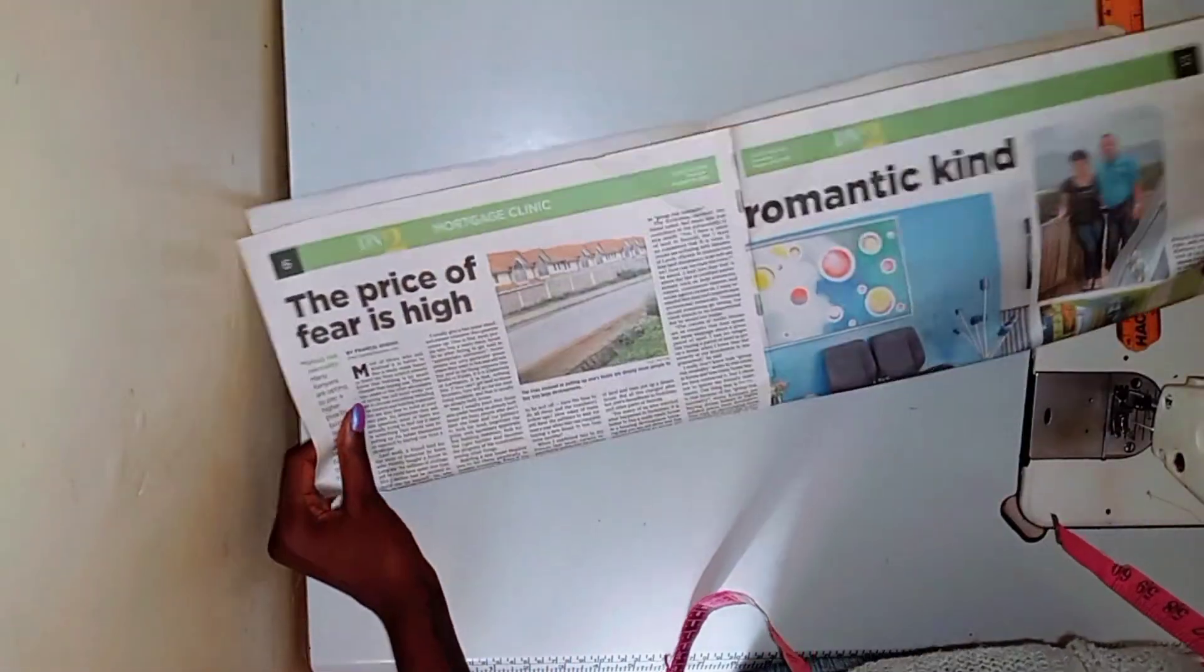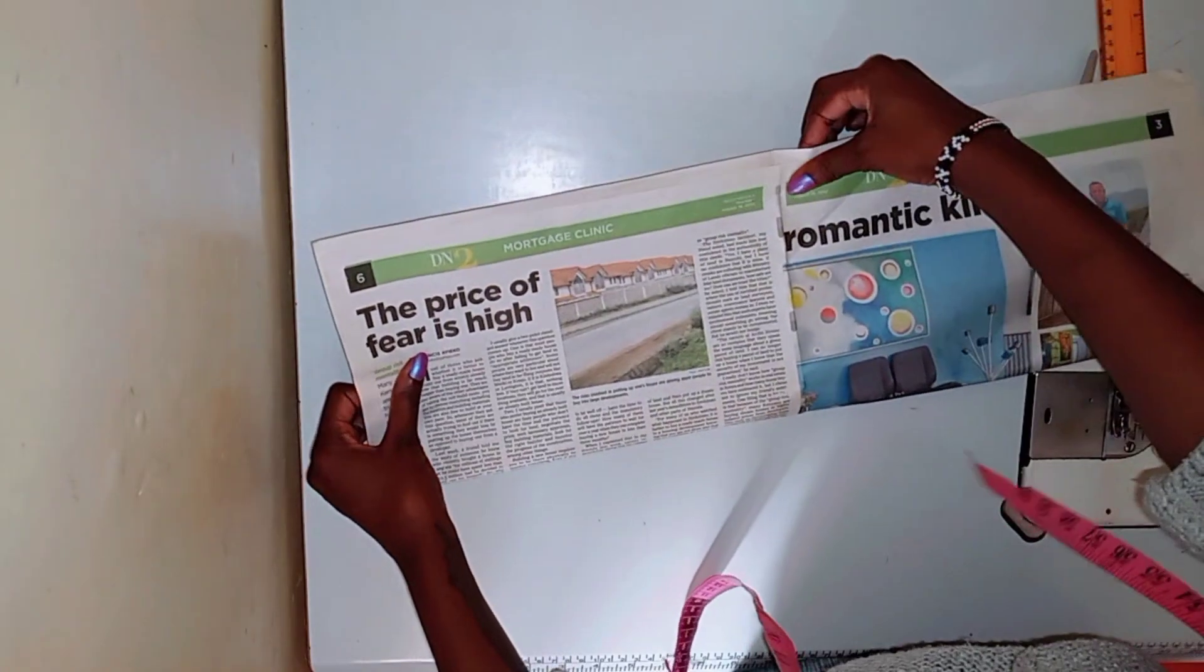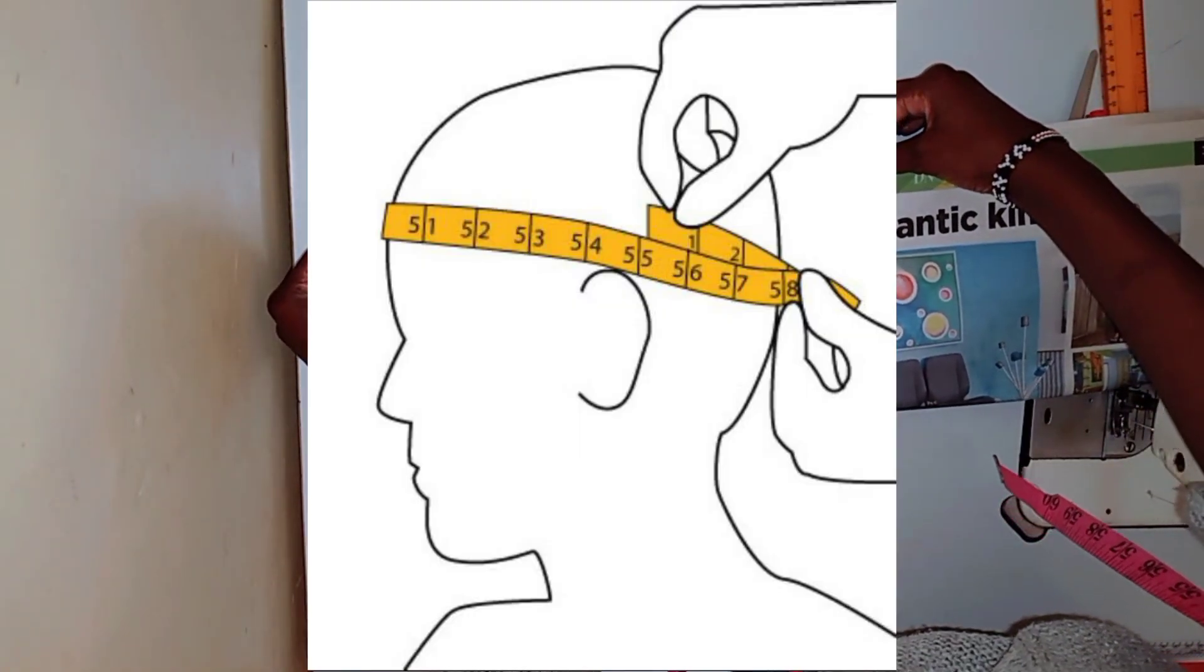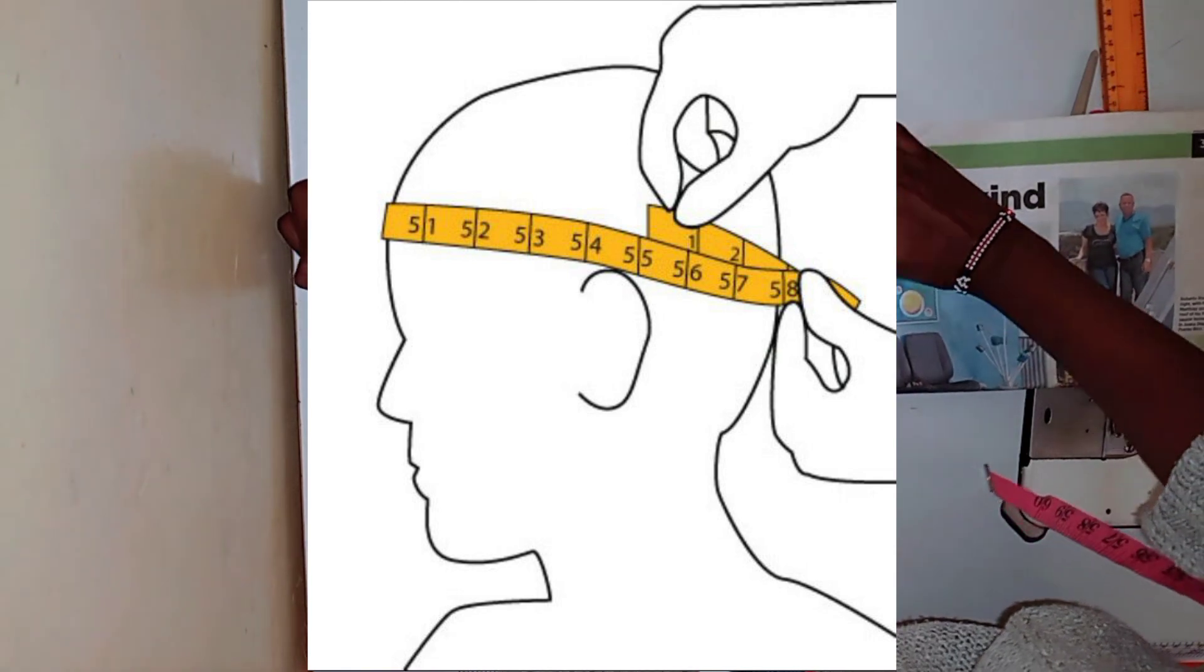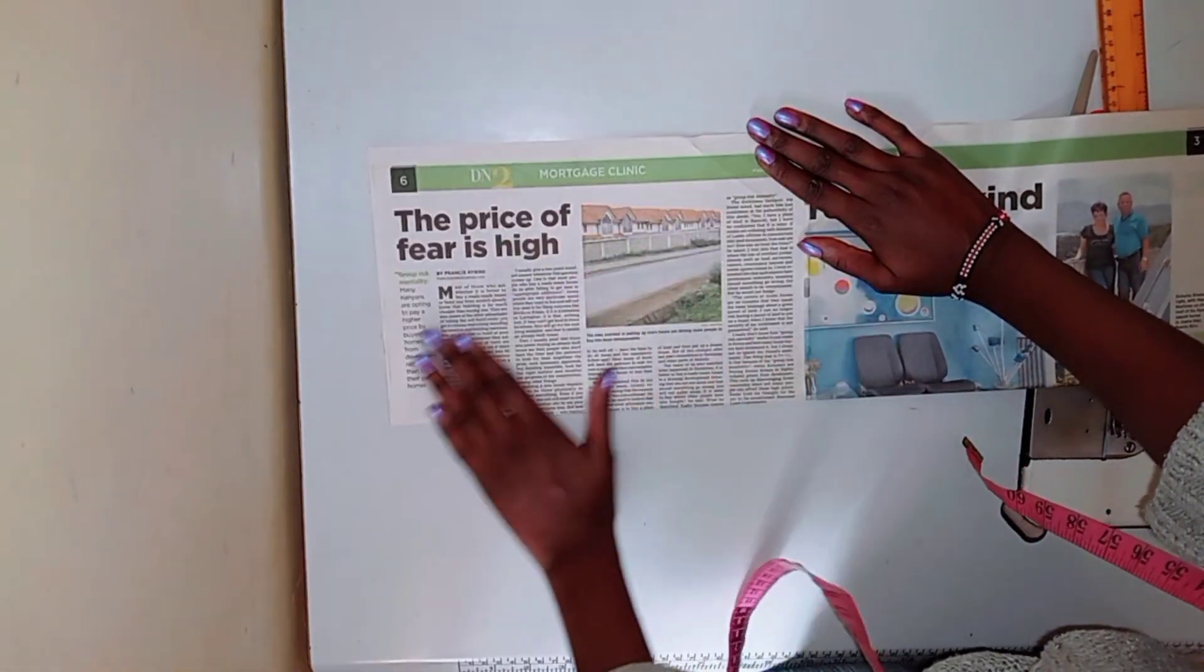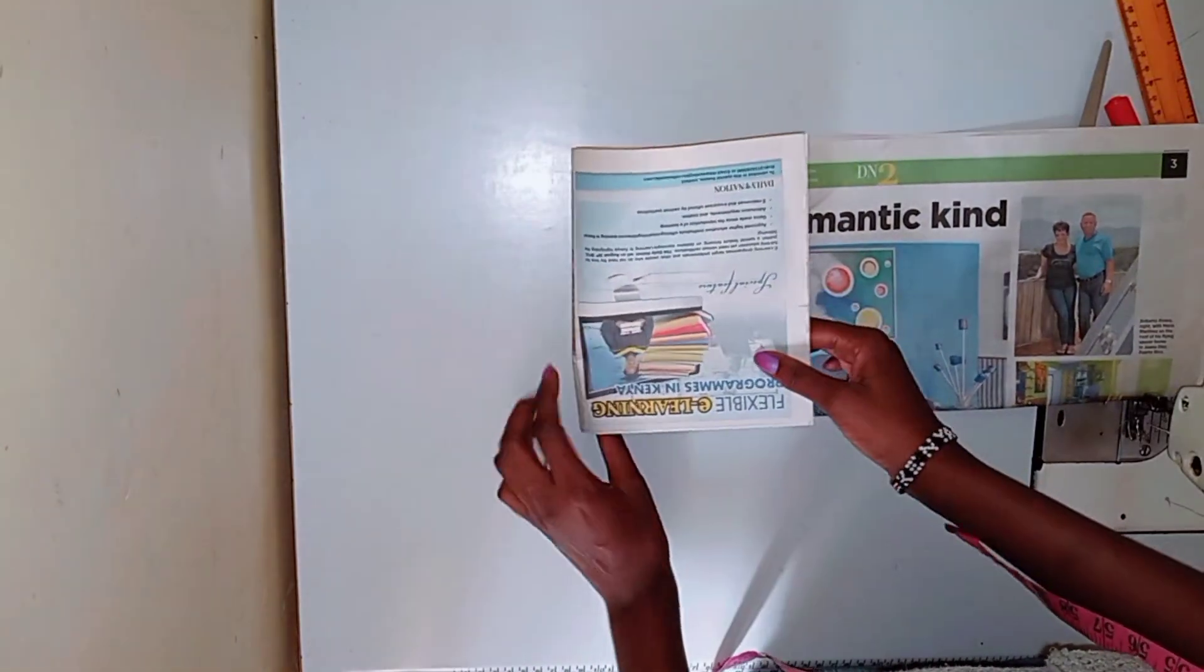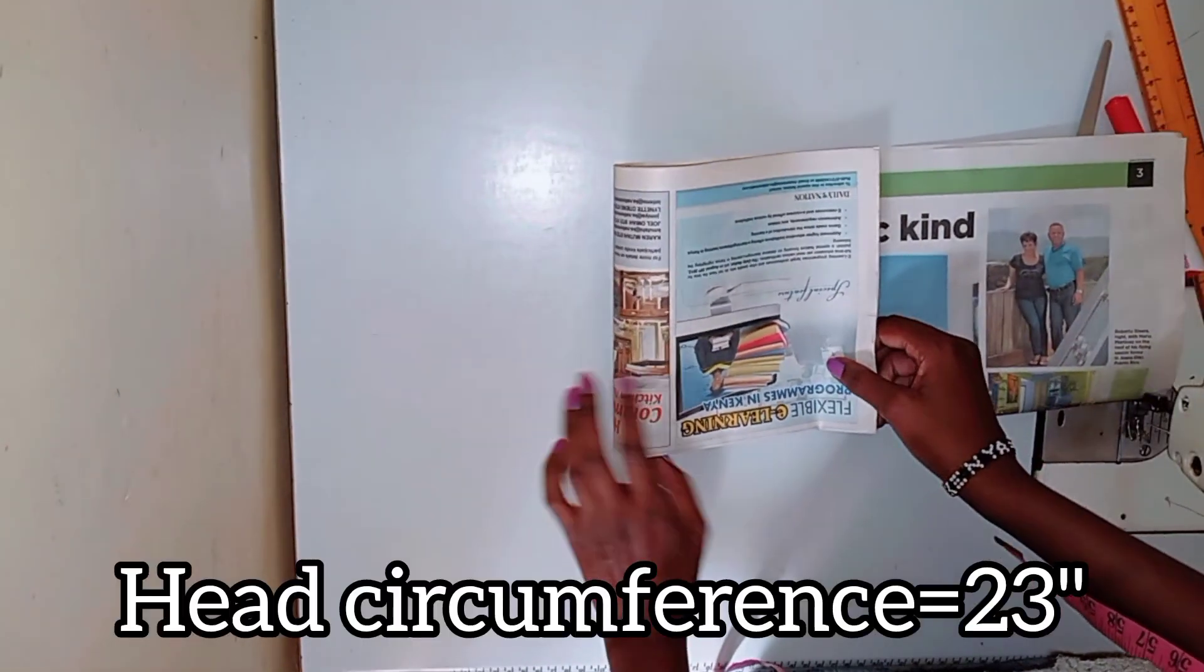First, we need to measure the circumference of your head where the hat will sit. Grab your tape measure and wrap it around your head just above your ears. Write down that measurement because it is the key to making a hat that fits perfectly. Mine was 23 inches.